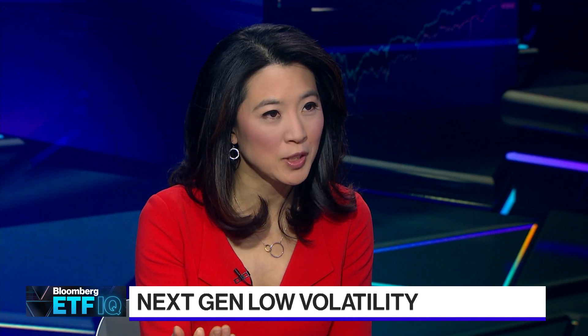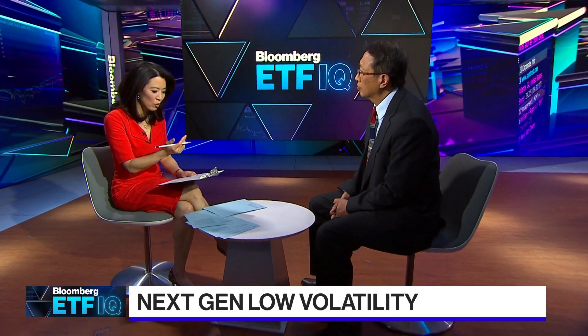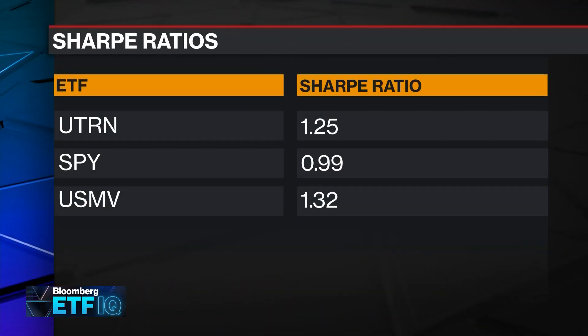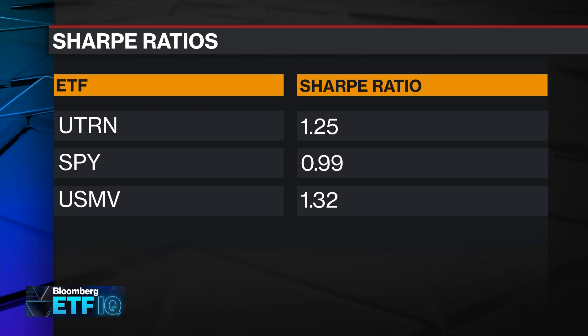Looking at U-Turn's risk-adjusted return, your Sharpe ratio is 1.26, just slightly lower than USMV, which is about 1.3 or so. You claim your ETF is the new school low volatility. What do you mean by that? The conventional viewpoint of volatility is the variation of symmetrical gain and loss. However, in reality we are facing a lot of asymmetric gain and loss. The reason I developed this is really to try to protect the downside based on asymmetric volatility. This is a new approach — nobody actually used that before.